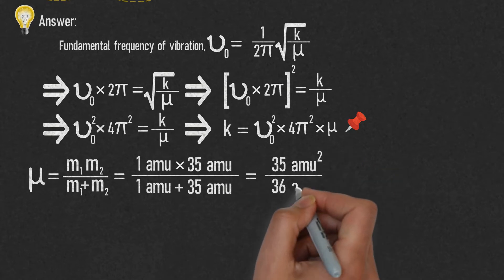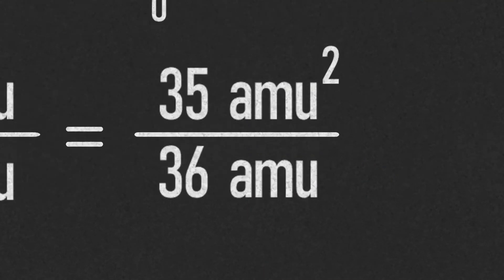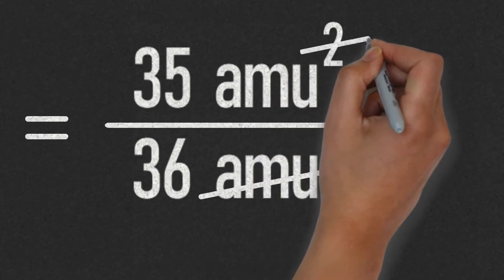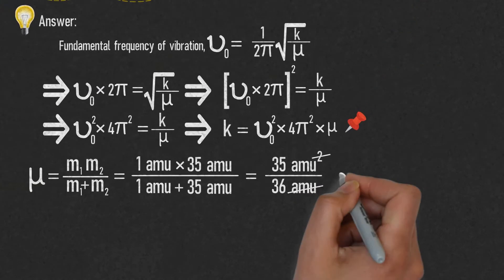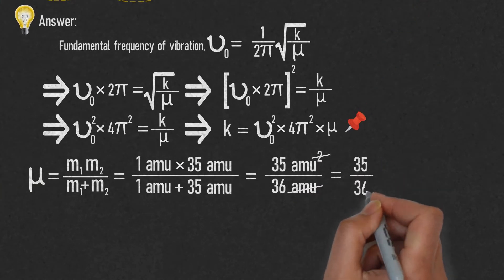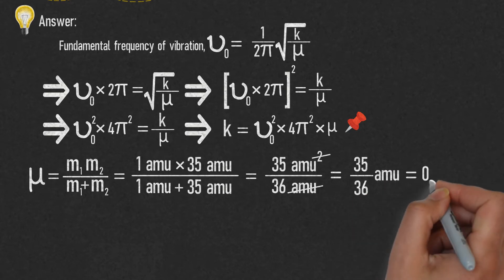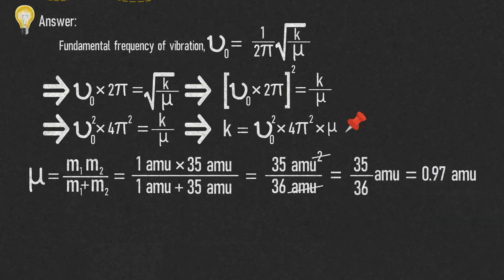Here we can cancel out the units like this. Thus, we have 35/36 amu = 0.97 amu. That is, μ = 0.97 amu.